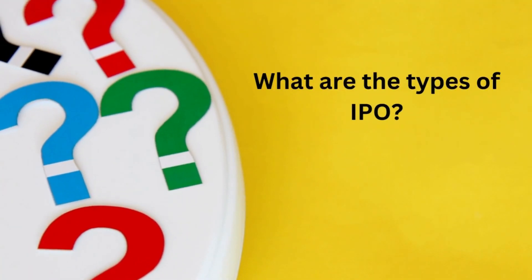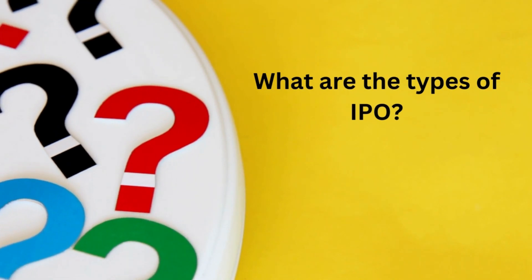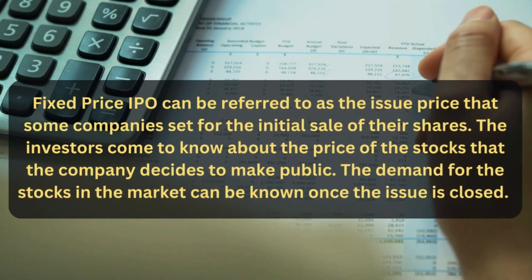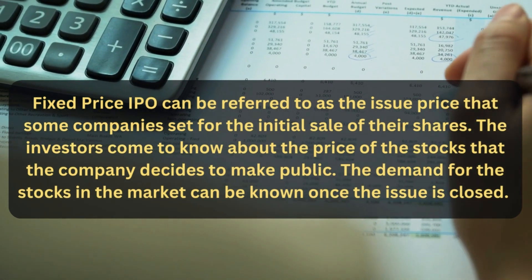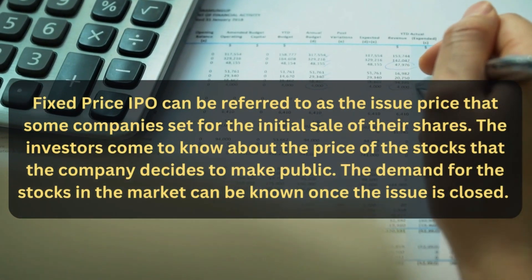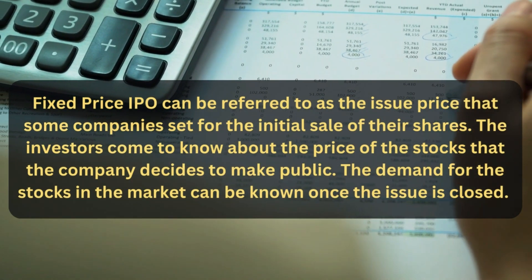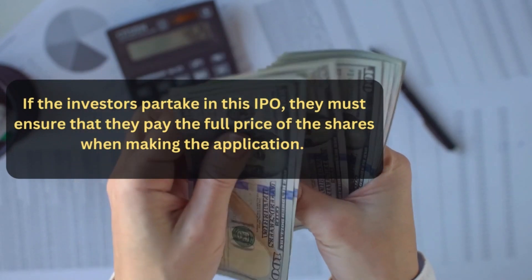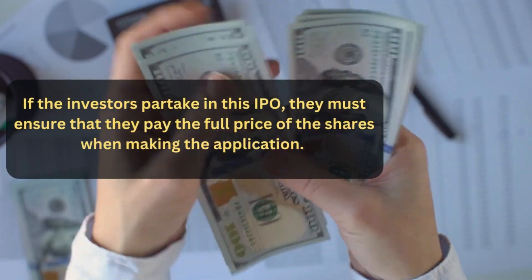We will discuss different types of IPO. There are two common types of IPO. First is fixed price offering. Fixed price IPO can be referred to as the issue price that some companies set for the initial sale of their shares. The investors come to know about the price of the stocks that the company decides to make public. The demand for the stocks in the market can be known once the issue is closed. If the investors partake in this IPO, they must ensure that they pay the full price of the shares when making the application.